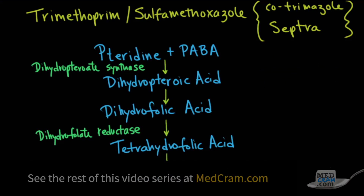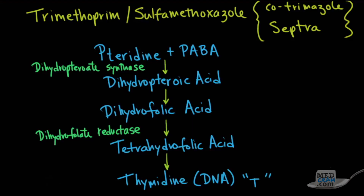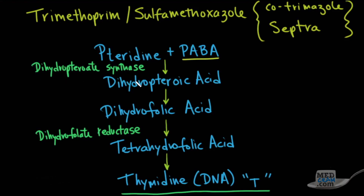Before we understand trimethoprim sulfamethoxazole as an antibiotic, we need to know one of the pathways to making thymidine. Thymidine is an essential part of DNA — it is the T in the genetic code — and how it is synthesized is very important because without this synthesis, you can't have life. The synthesis starts off with pteridine and PABA, which stands for paraaminobenzoic acid. These two come together with the help of an enzyme called dihydropteroate synthase to make a new substance called dihydropteroic acid.